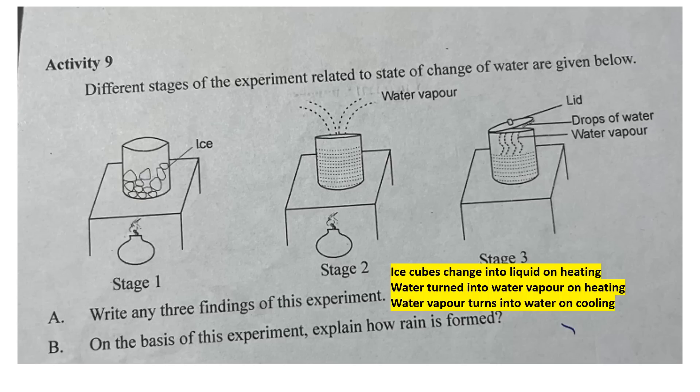Condensation takes place. Water vapor is formed, then condensation occurs. Clouds are formed when the vapor cools.